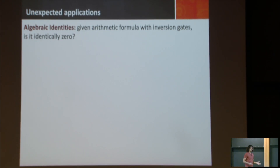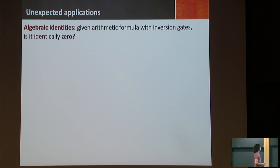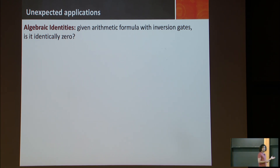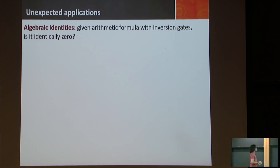So, unexpected applications — some of which are not so unexpected, because you've been hearing us talk about this for a while. First: algebraic identity. If I give you an arithmetic formula with inversion gates, is it identically zero? If you know polynomial identity testing, this is the non-commutative version of it for rational functions and rational expressions. So this is one problem.